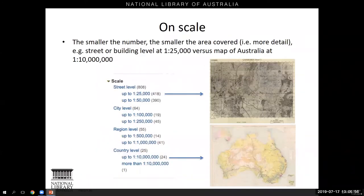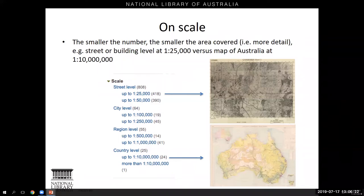Before we move on, here's a quick note on scale. Scale is the relationship of the distance measured on the map and the distance on the ground, expressed as a ratio. The smaller the number, the smaller the area covered, meaning a more detailed map. I've taken from Trove this handy guide to what is depicted at various scales. The map at the top is a map of Canberra at 1 to 25,000 scale, on which you can see Parliament House. Below is a map of Australia at 1 to 10 million scale. For bushwalking, 1 to 25,000 or 1 to 50,000 would best suit your purposes.